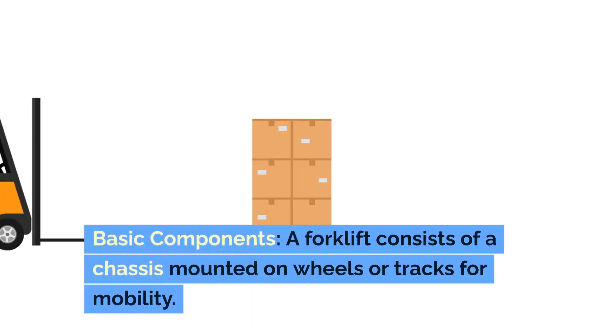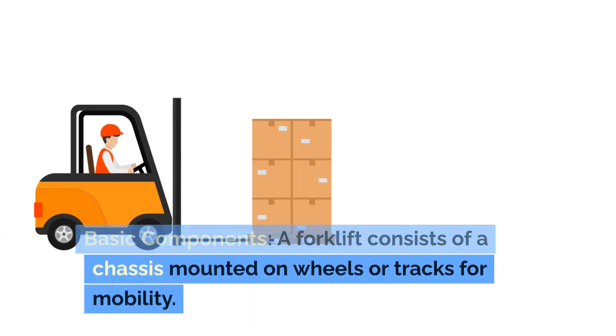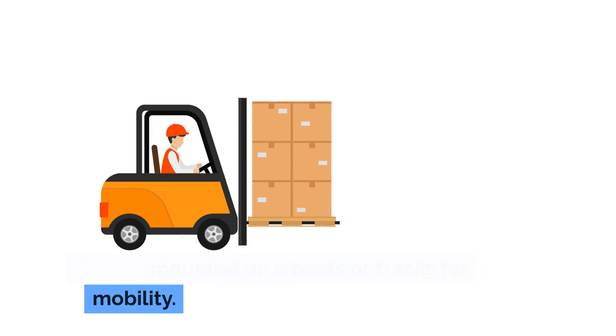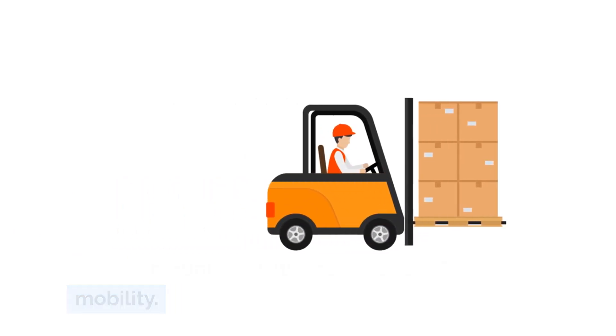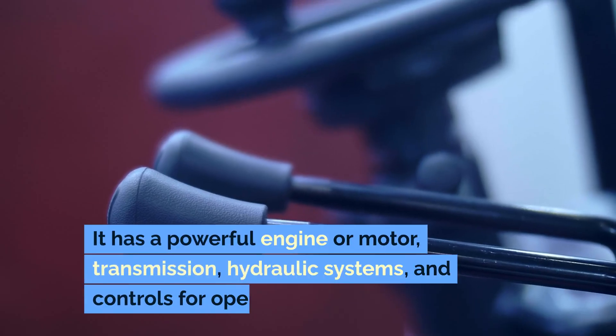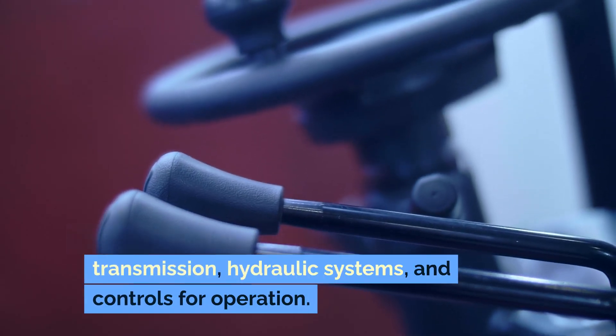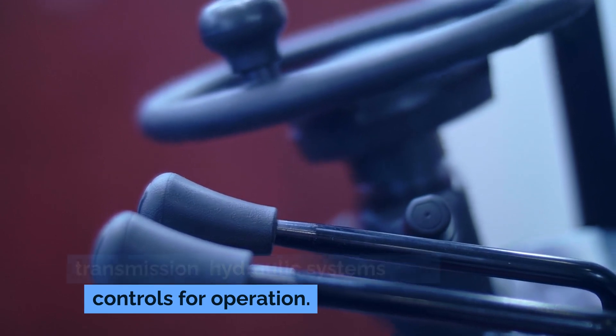Basic components: a forklift consists of a chassis mounted on wheels or tracks for mobility. It has a powerful engine or motor, transmission, hydraulic systems, and controls for operation.